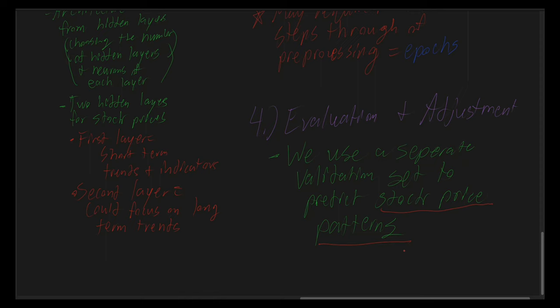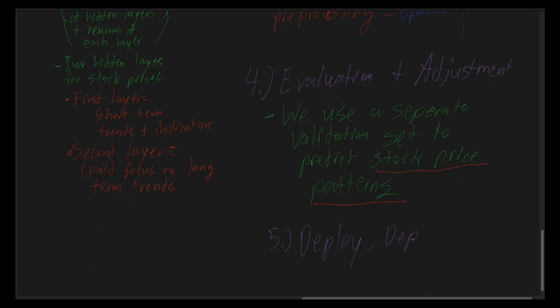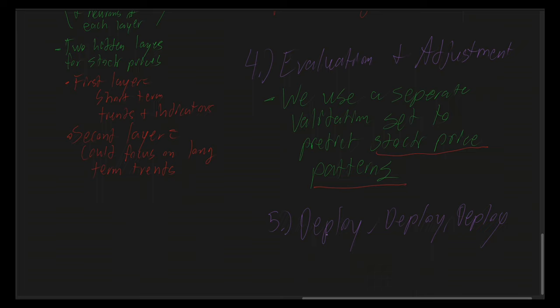Finally, once the model is trained and validated, it can be deployed in real-time trading applications. Here it will receive live data, process it through the trained neural network, and output the stock price predictions. With continuous monitoring, it is necessary to ensure the model remains accurate over time, and retraining may be required as new data becomes available or market conditions change.